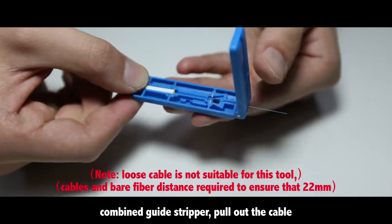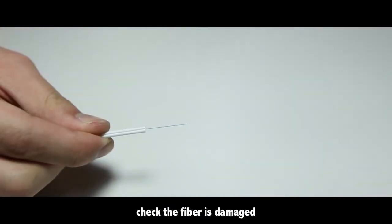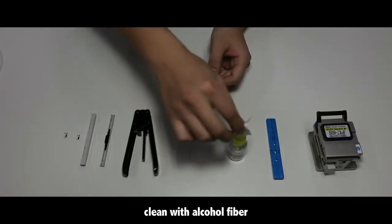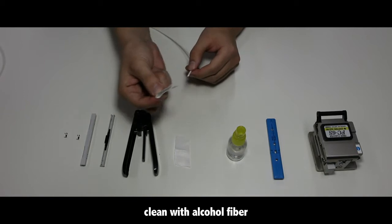Combine the guide stripper. Pull out the cable. Check if the fiber is damaged. Clean the fiber with alcohol.